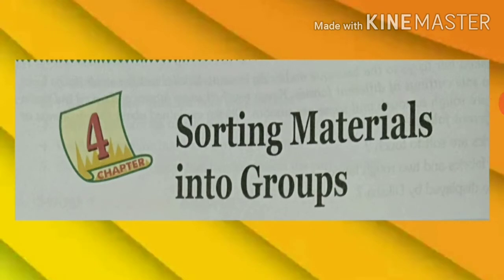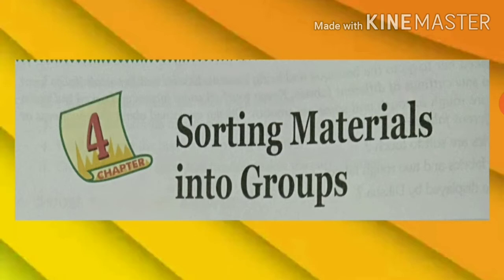Before we discuss the chapter, let's clear the meaning of the title. Sorting means to classify. Material means the matter from which a thing is made. Matter means anything which has mass and occupies space. There are many objects around us with different shapes, colors, properties and uses. They can be made up of one or more materials. The process of placing or keeping similar things together is called grouping.